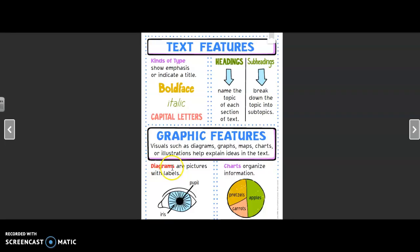Some examples, diagrams are pictures with labels. They're not just any pictures, they have labels. And here's an example of an eye. We know that the black part is the pupil, and the colored part of the eye is the iris.